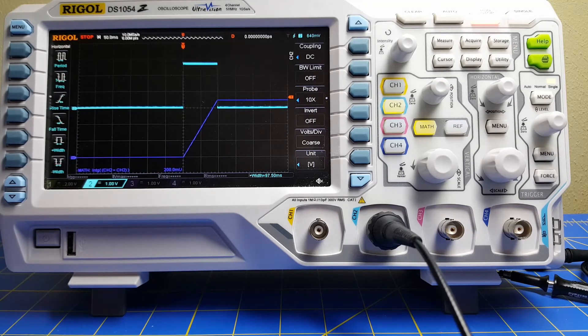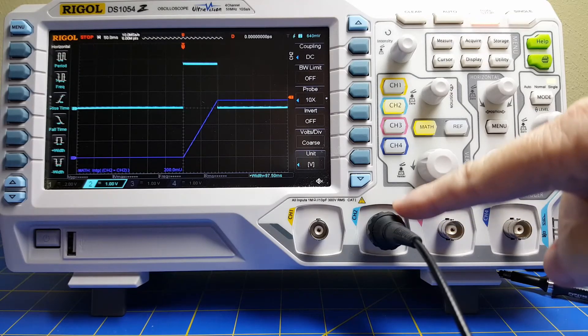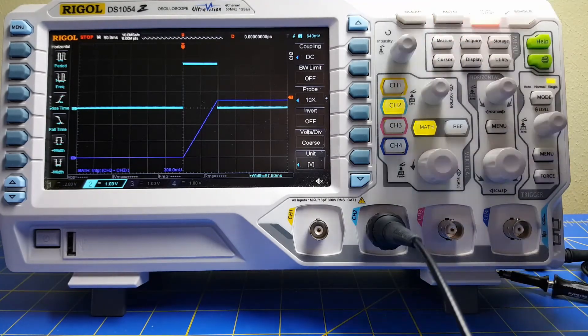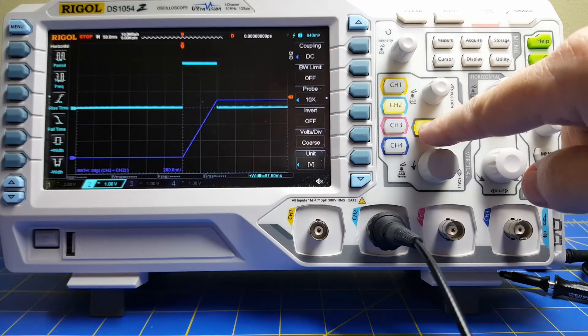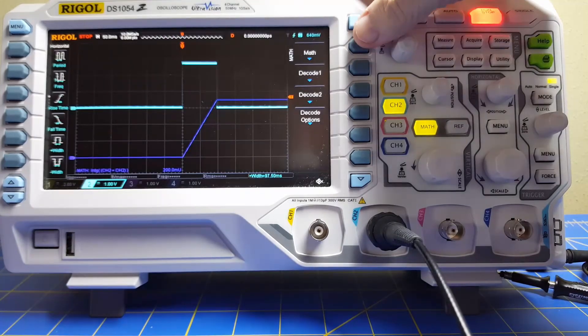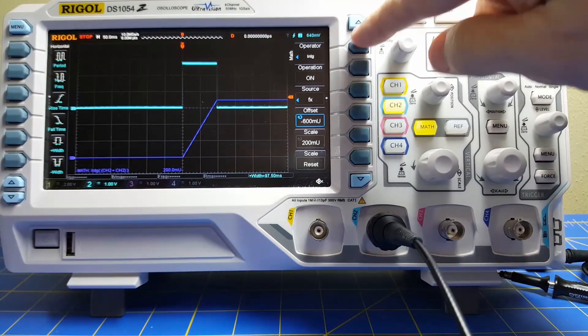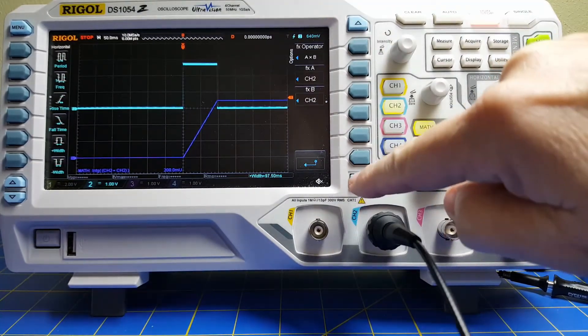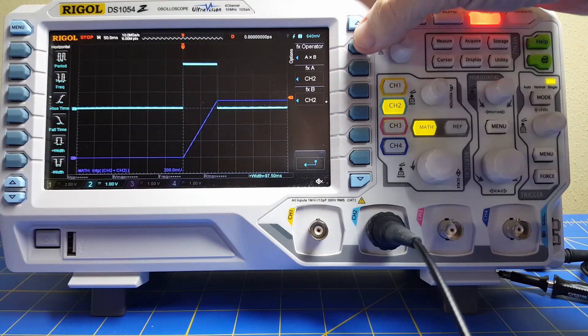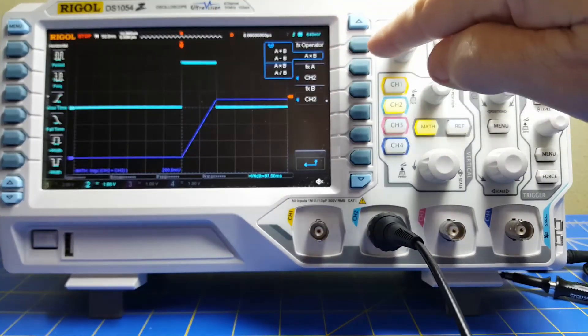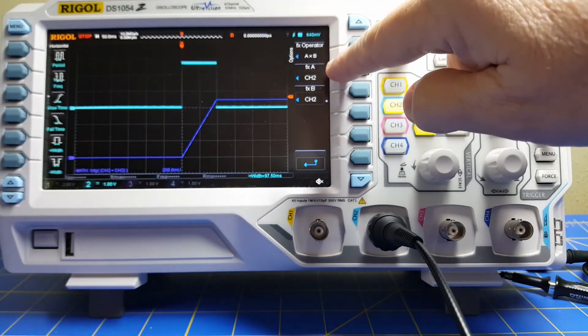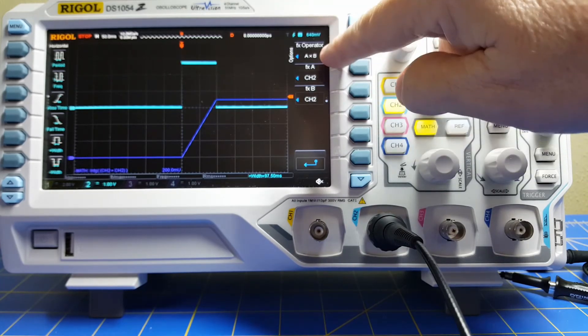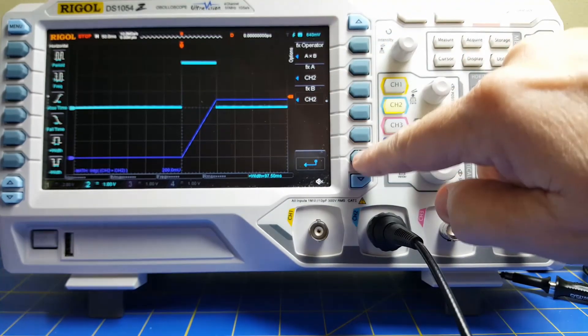All right, so here's the basic steps on the Rigol 1054Z. You can see I've got my pulse coming into channel two, so that we can make sure we don't just default to channel one, make sure we got our settings right. So I got channel two. And first thing you go into the math button, press this math button, and the math options will come up. Select this first one that says math. And what we have to do is we have to scroll using this down arrow. And we have to go to options. And we have to scroll again. And here we've got the fx operator. And we have it set at a times b. And that will do the I squared value. As long as we have fx a and fx b selected to the proper channel, I've got channel two here. So it's going to do an a times b for the same channel. So then we're all set.